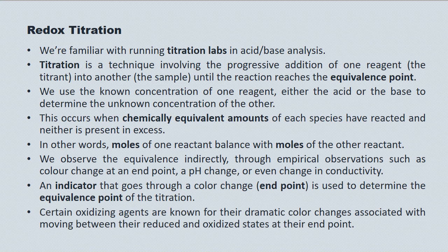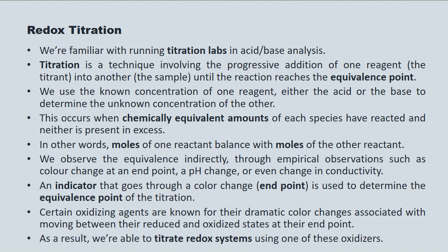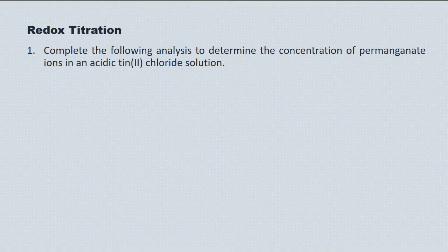Certain oxidizing agents are known for the dramatic colour change at their end point, when they move from their reduced to their oxidized states. Because of that, we're able to titrate redox systems using one of these oxidizers. Here's an example question: we're going to complete the following analysis to determine the concentration of the permanganate ion in an acidic tin(II) chloride solution.